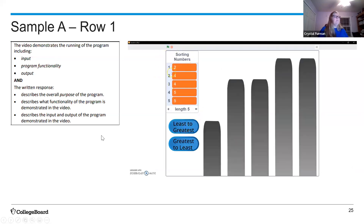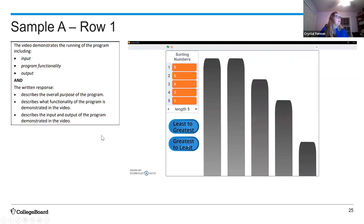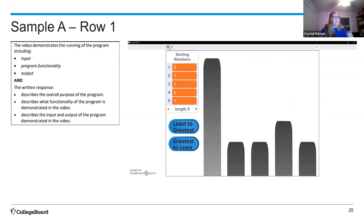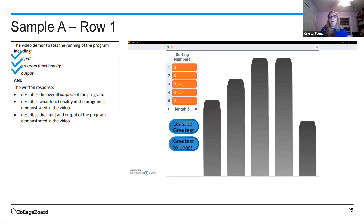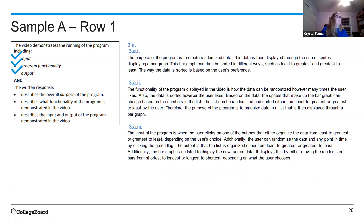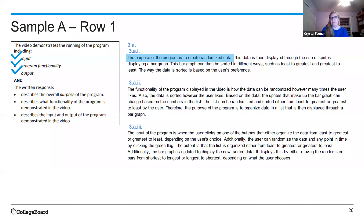For row 1, looking at the video: there is input (clicking buttons), there is functionality (things happening), and there is output (bar graphs changing). They get those first three bullets. Moving to the written response: they say 'the purpose of the program is to create randomized data' — that's not a purpose, it's what it does (a function). We don't know what the randomized data means or what it's being used for.